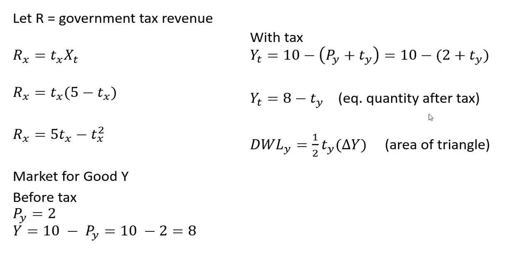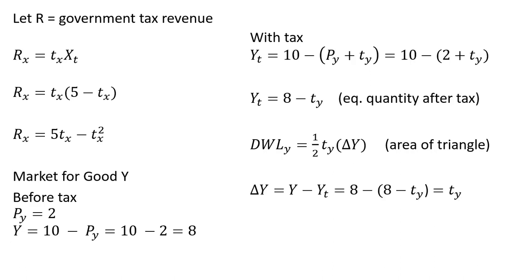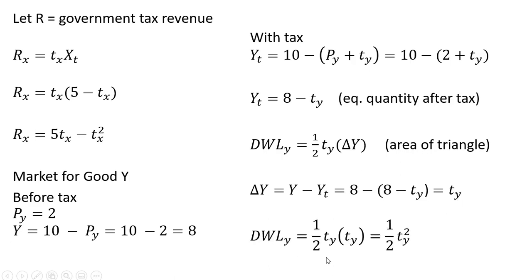The deadweight loss is the same approach: envision the area of a triangle in a supply and demand diagram, one-half base times height. The height is the tax, and the base is the change in equilibrium brought about by the tax. The change in Y is 8 (before the tax) minus the equilibrium quantity when we impose the tax, which simplifies to the tax in the market for good Y. Substituting into the formula, we get the deadweight loss expression for the market for good Y.